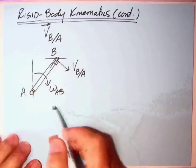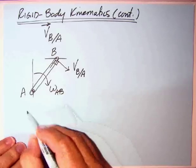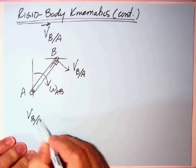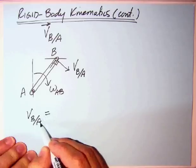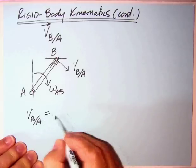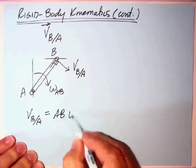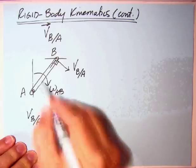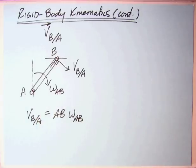And in fact, from our motion in a circle, what that comes out to be is the velocity of B relative to A. Of course, it has some components relative to a system. It is equal to AB times the omega AB. And I've shown that in the clockwise fashion.